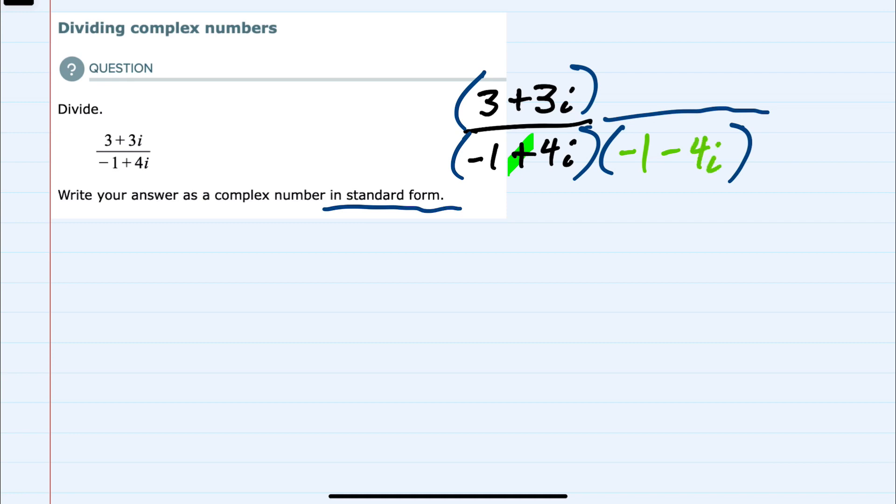And if we multiply the bottom by negative 1 minus 4i, we must also multiply the top by negative 1 minus 4i. So doing this multiplication on the top and the bottom will rationalize our expression. If I distribute that minus 1...